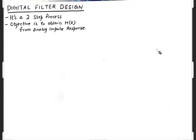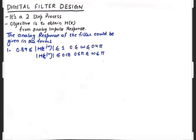Hello friends, welcome to another video in digital signal processing. In this video we'll talk about digital filter design. It's a two-step process and the objective is to obtain H(z) from an analog impulse response. I'll tell you the steps in detail and all the possibilities that could come in a question. We need to understand that the analog response of the filter could be given either in the form of magnitude or in the form of attenuation, so our first job is to understand what is given.